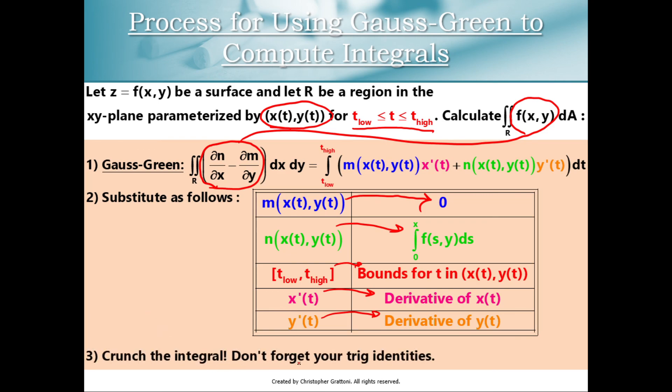When you do the number crunching, you are going to probably need some trig identities, because our x(t), y(t) is typically going to be a circle or an ellipse or something involving trig functions. So don't forget your trig identities. Don't forget your u-substitution techniques when you're trying these problems.